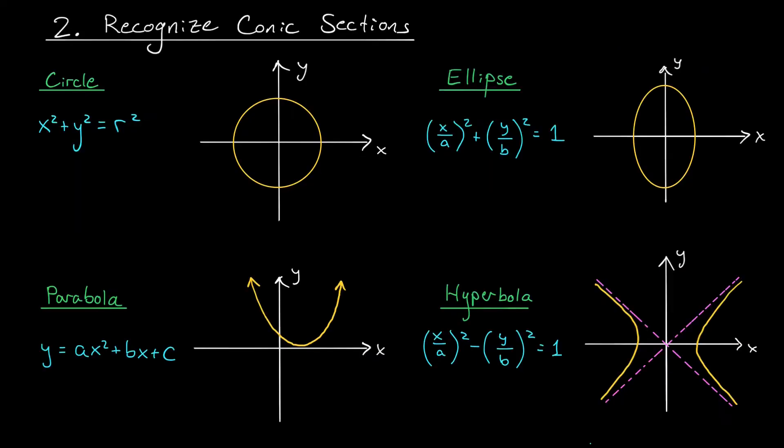In our last example, we were able to recognize our level curves as a collection of circles centered at the origin. Now this is pretty typical. There are lots of familiar surfaces that will have circular level curves, like cones, spheres, and paraboloids. But of course, there are many other common curves that you'll encounter when solving these types of problems. On this slide, I'm going to tell you about four of them, called conic sections.